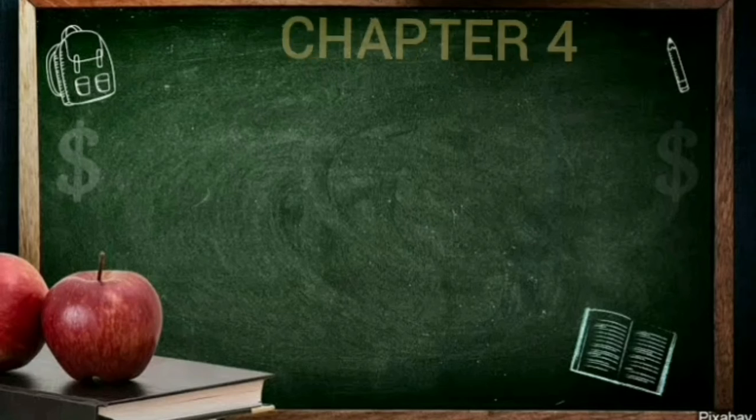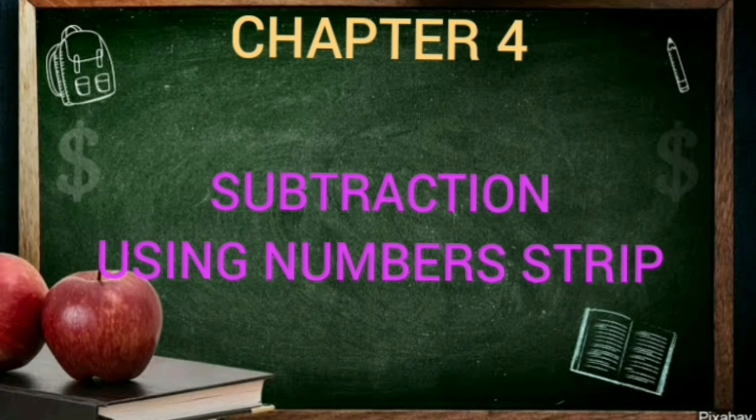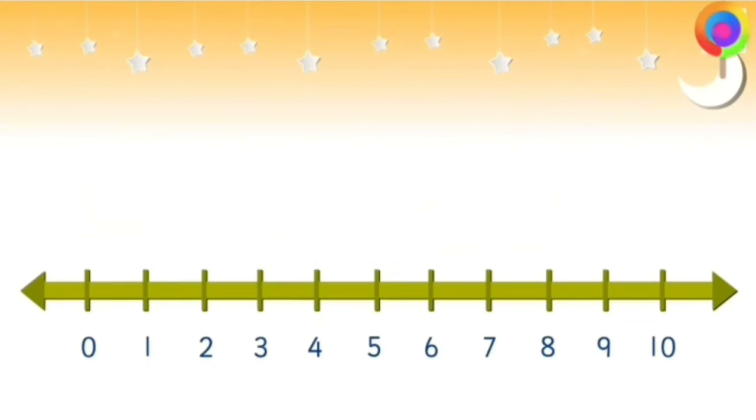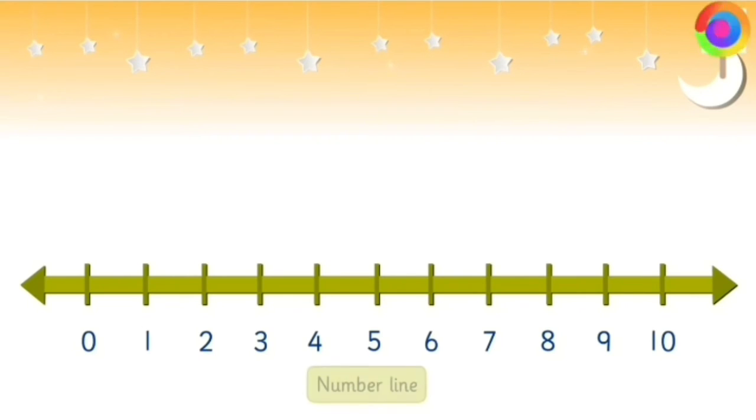The next topic is subtraction using number strip. We did addition number strip and it is stepping forward. Whereas, in subtraction, it is backward step. Here is a number line from the numbers 0 to 10. And we are going to do backward jump for subtraction.